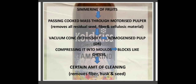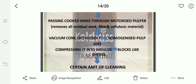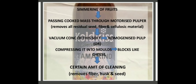The next product is tamarind preserve. The process involves simmering of fruits, passing the cooked mass through a motorized pulper, vacuum concentration of the pulp, homogenizing the pulp, and then compressing into molds, blocks, or cheese form with cleaning. This is an intermediate product used in industry.